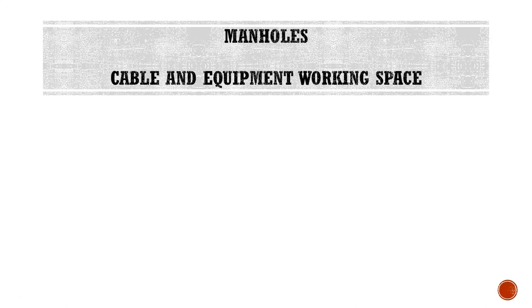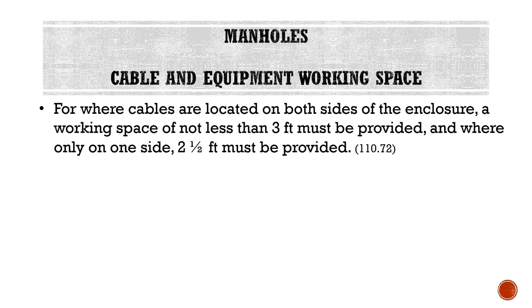Regarding cable and equipment working space within manholes: where cables are located on both sides of the enclosure, a working space of not less than three feet must be provided. Where cables are only on one side, a working space of two and a half feet must be provided. We're always going to need some type of working space inside a manhole in order to safely work while inside it.